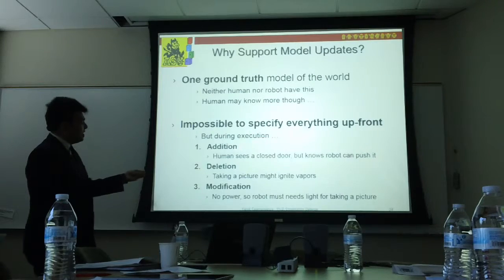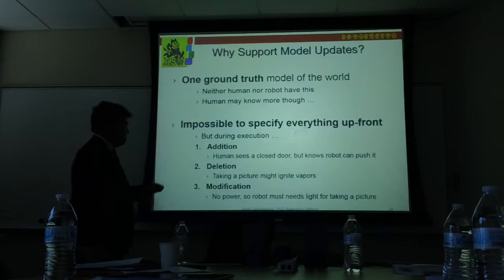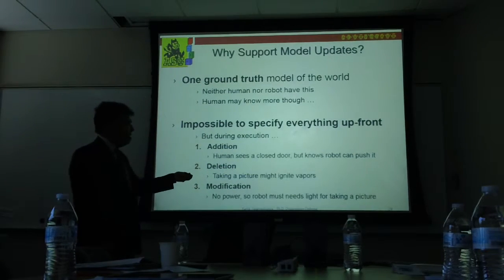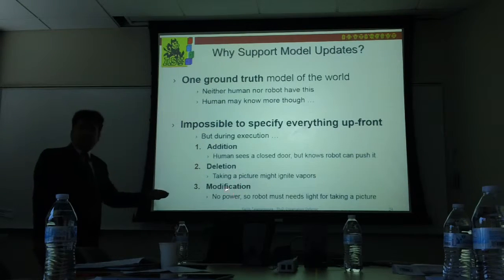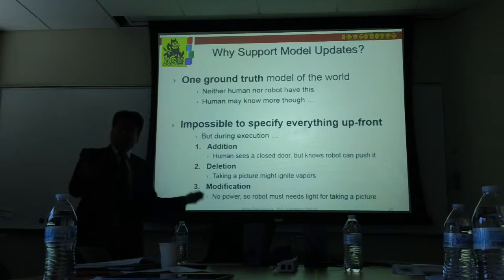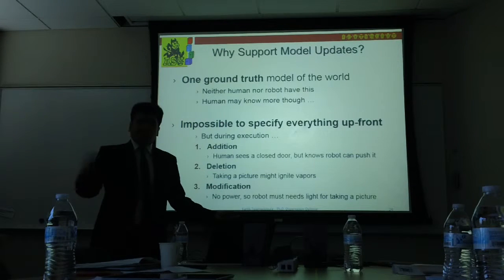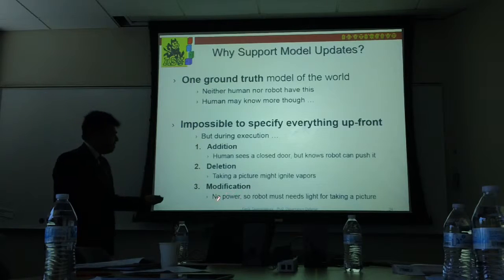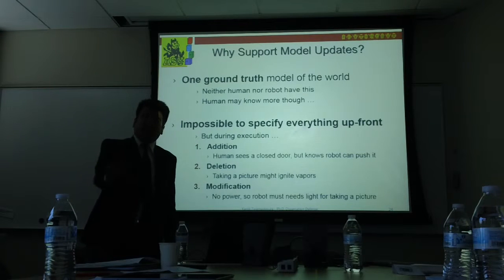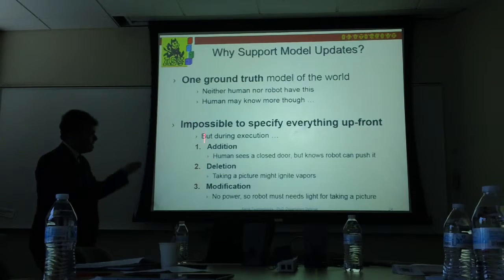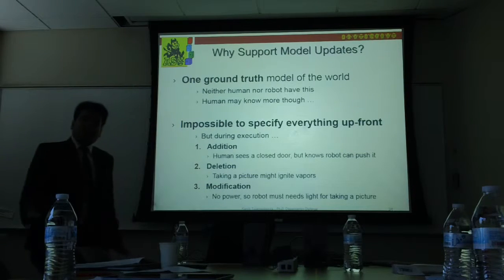During execution, humans might think of a new action the robot could perform — like the push action. You can also have action deletion: for example, if there's a gas leak you don't want the robot to take pictures. There can also be modification to actions: if there's a power outage causing poor lighting, you want to add a new precondition for taking pictures, requiring an auxiliary source of light. This information may strike the human during execution time.